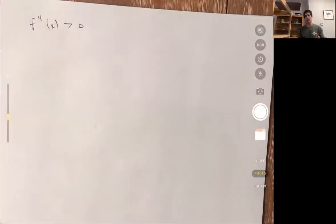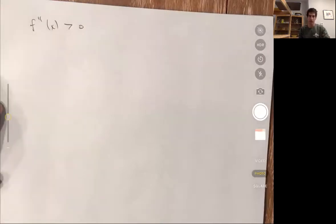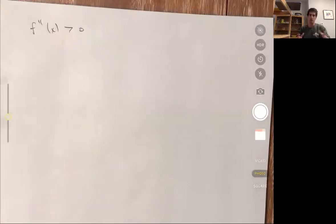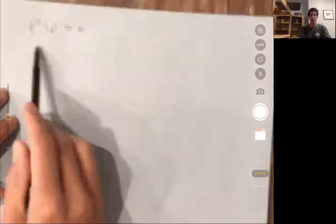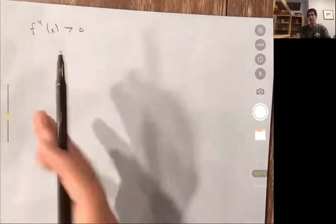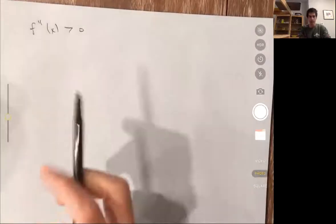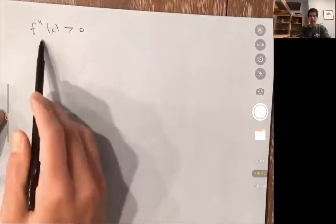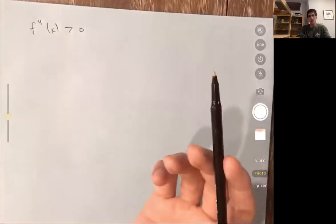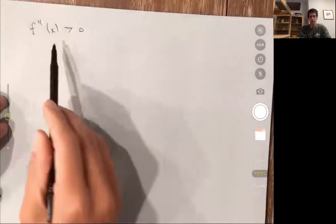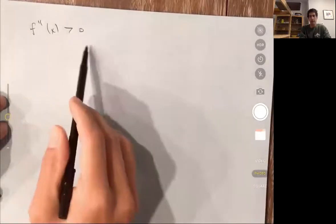This video is about the sign of the second derivative and what it tells us about the original function. I'm going to do two parts: the first will be when the sign of the second derivative is positive, and the other when it's negative. So if the sign of the second derivative is positive, I want to know what does this mean for the original function.